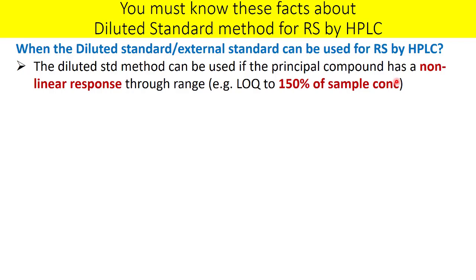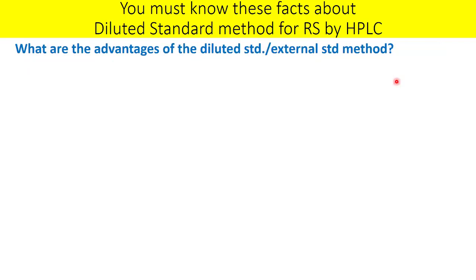Percent area normalization is another technique that can be used if you have a linear response from 4 ppm to 400 ppm or beyond. But if the response is not linear, use the diluted standard method instead.